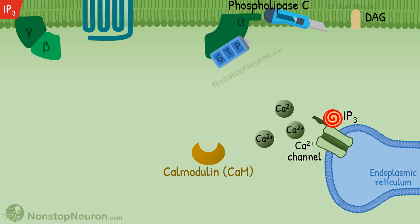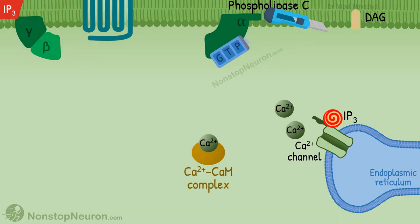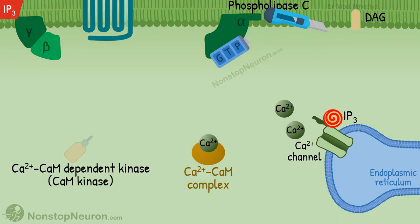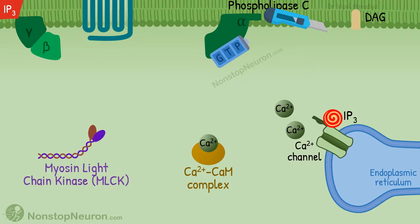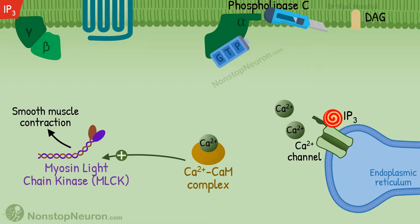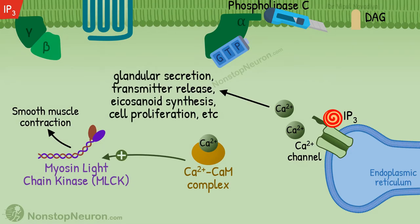The calcium then binds with various calcium binding proteins. The most important calcium binding protein is calmodulin. Its binding with calcium produces the calcium-calmodulin complex. Many enzymes in the cell depend on this complex — they are called calcium-calmodulin dependent kinases, or CAM kinases. For example, myosin light chain kinase in smooth muscle cells is a CAM kinase. The calcium-calmodulin complex activates this enzyme, causing contraction of smooth muscle. Other effects of increased calcium include granular secretion, transmitter release, eicosanoid synthesis, and cell proliferation.